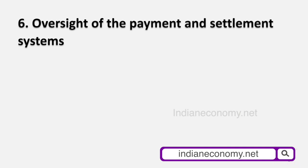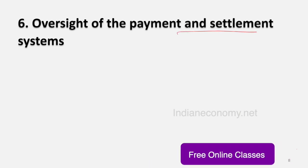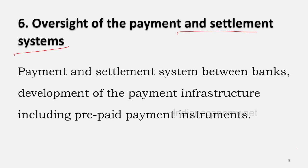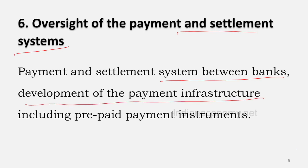The next function is oversight of the payment and settlement system — an important network for the banking system. Payment between banks and its settlement is critical to facilitate money transactions. It is the responsibility of RBI to create and promote the payment and settlement system.